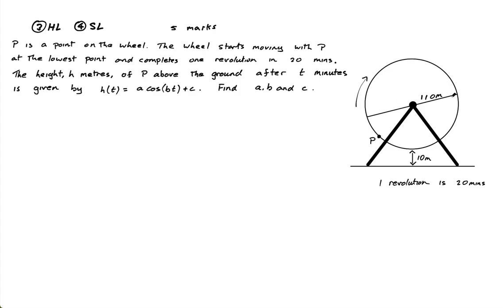Okay, next question. So we have a Ferris wheel. P is a point in the Ferris wheel and it starts with P at the lowest point. So P starts here, the lowest point. By the way, it's 10 meters off the ground. So it starts here and starts rotating, goes up and then it goes down, it goes up and then it goes down.